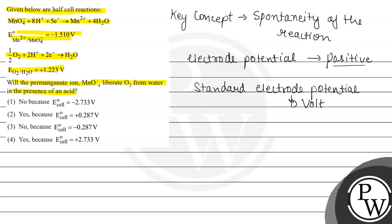Now the point is how do we find the electrode potential? That can be written as E°cell, which is equal to the standard reduction potential of the cathode minus the standard reduction potential of the anode. The cathode is where reduction occurs and the anode is where oxidation occurs.